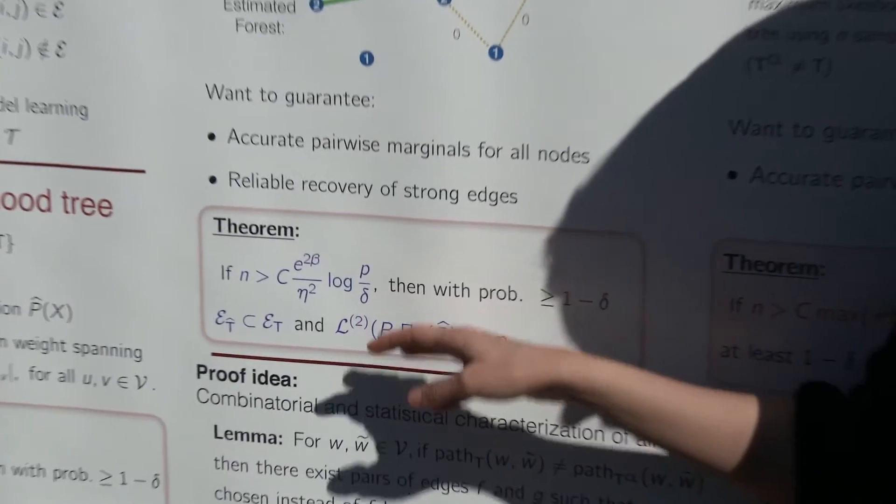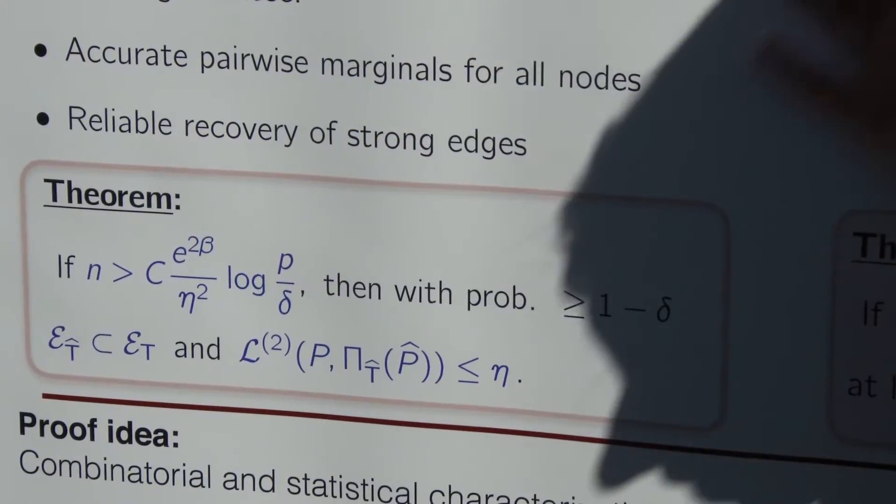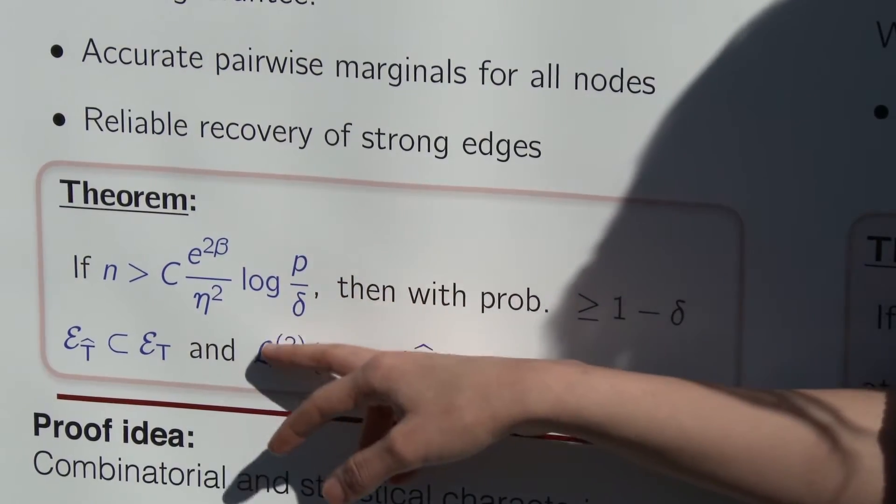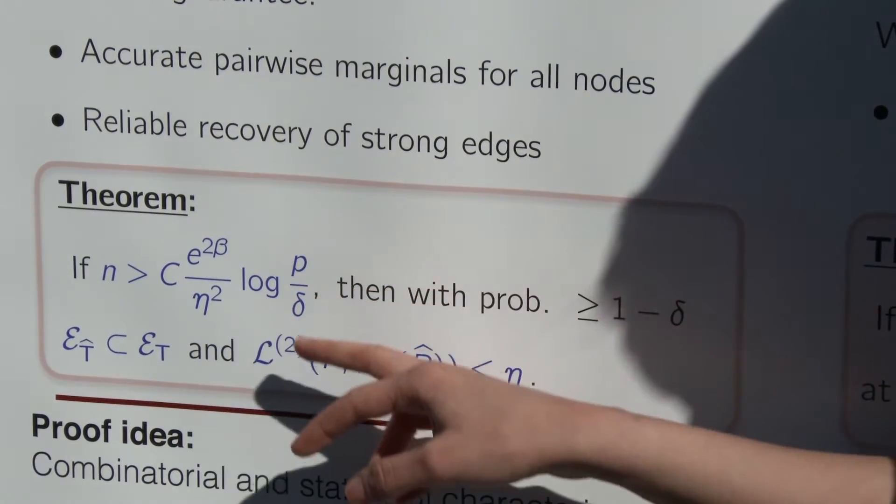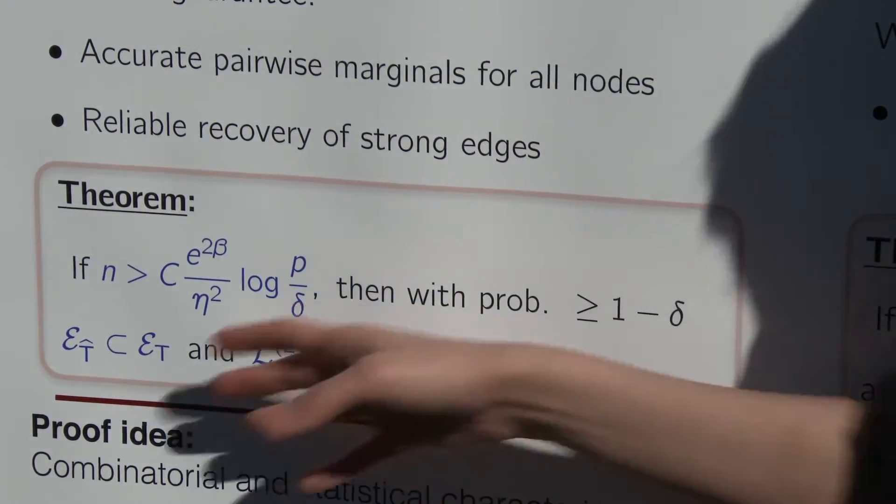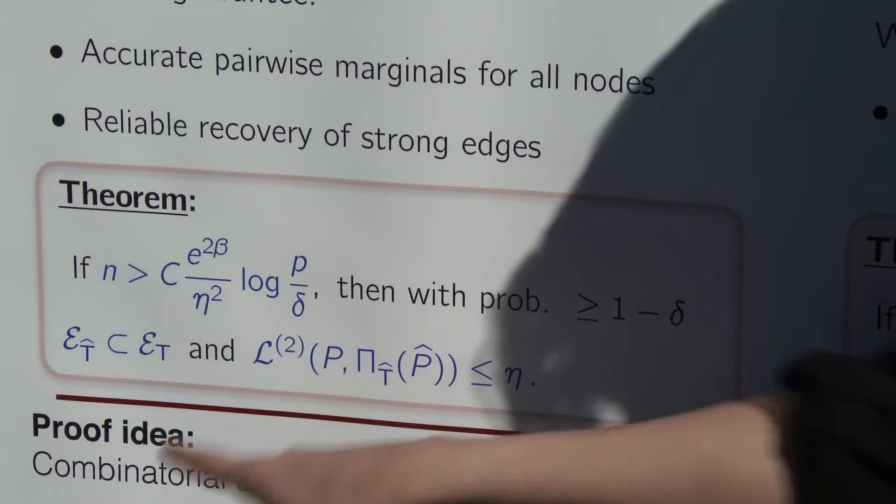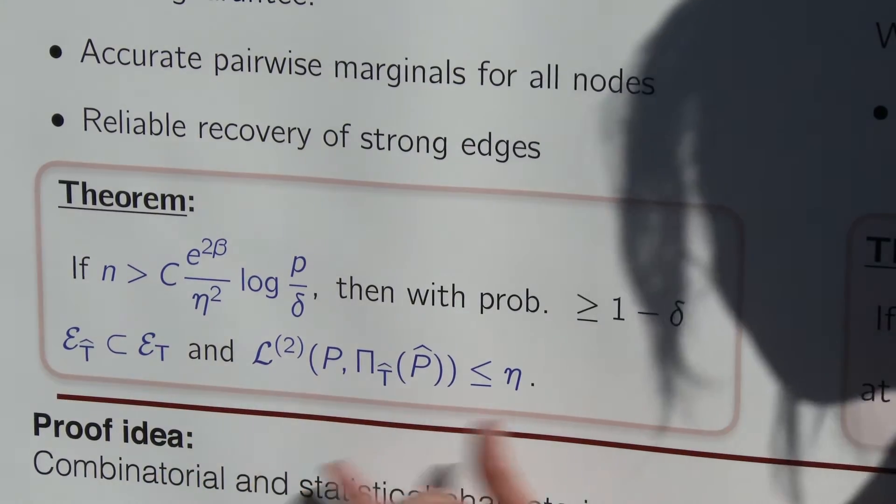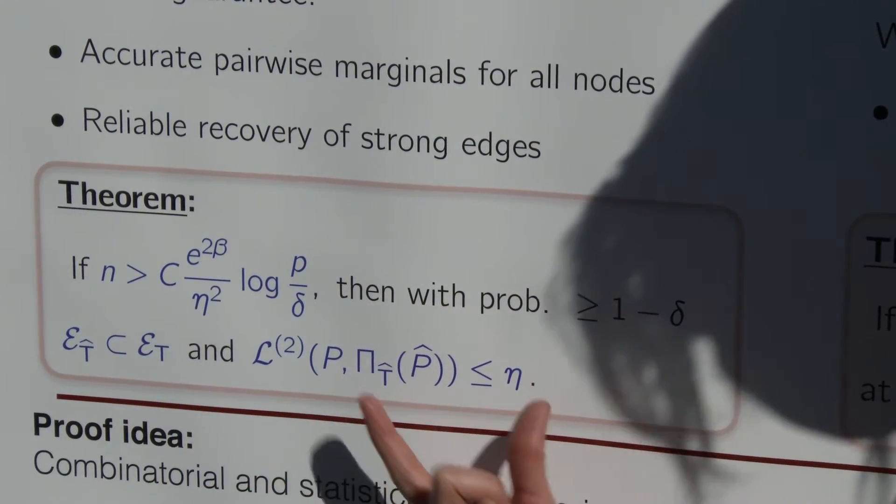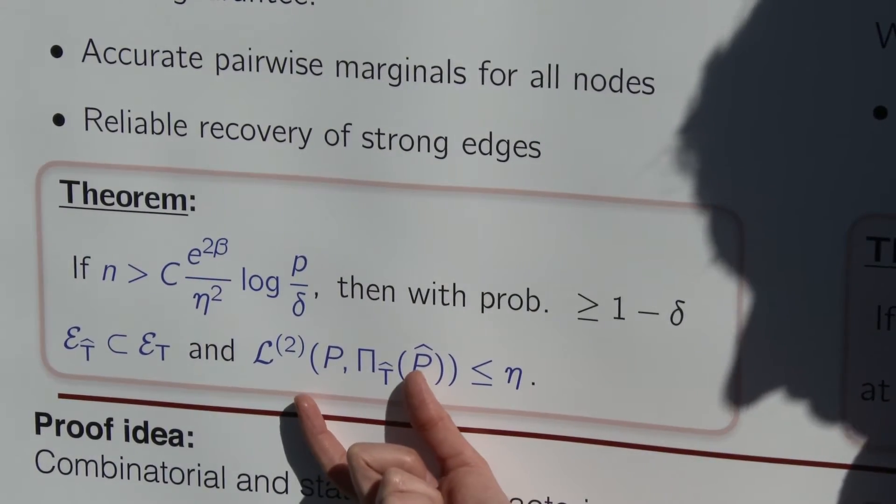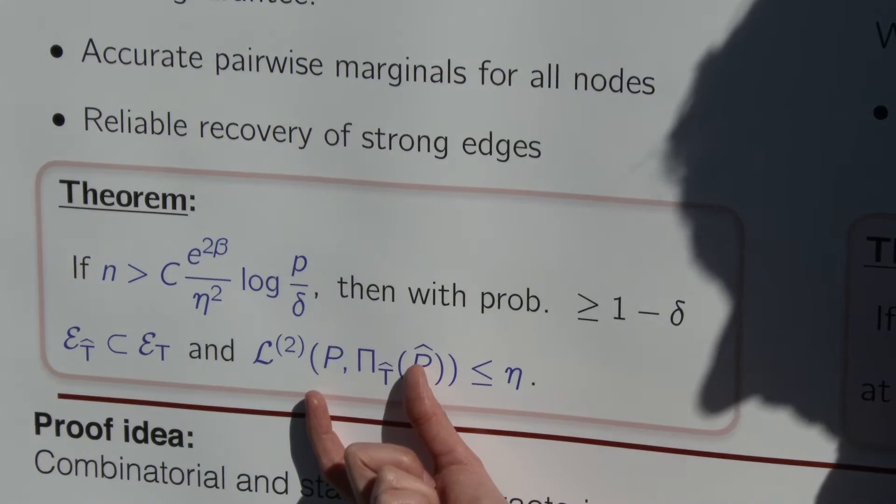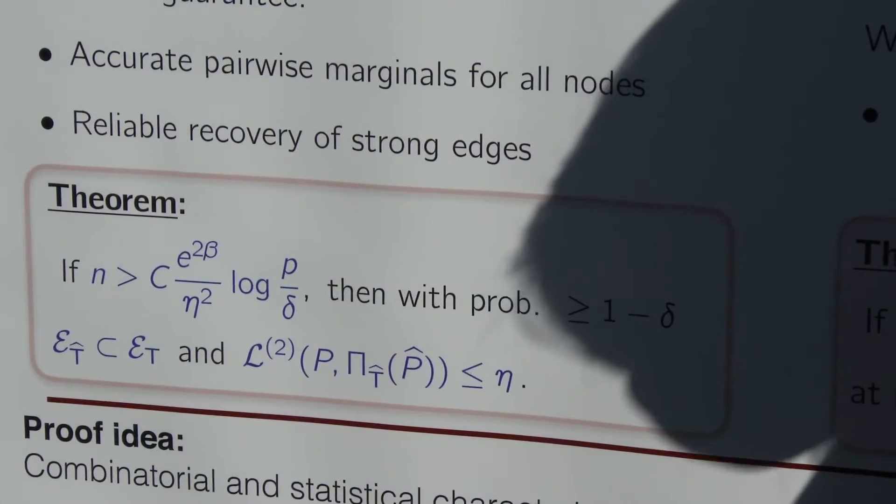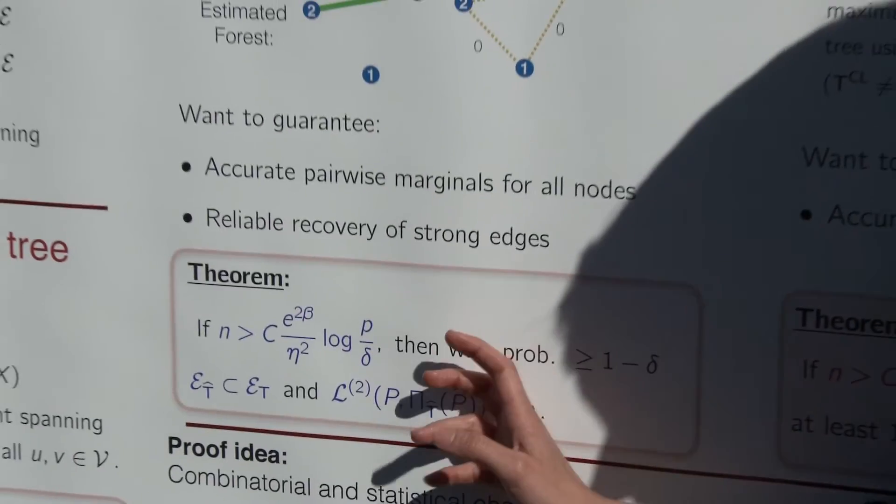I did some calculation and I got the tight results on the sample complexity of this learning algorithm. I showed that if the number of samples is greater than e to the power of two beta times over eta square times log p, then I can recover the stronger edges reliably. And in addition to that, I can make sure that I'm estimating pairwise correlations within eta. This is with high probability result. And actually, this is tight bound. We have the converse bound for this.